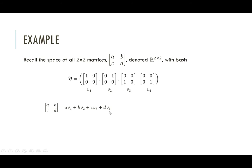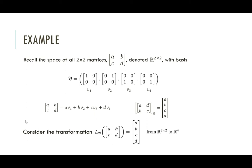Since we can write this matrix as a linear combination of these basis vectors, we can write what's called the coordinate vector of this matrix in this basis. We take the coefficients of the basis vectors — the coordinates — and write the coordinate vector. Now let's consider this process as a transformation itself: a transformation that takes as input a matrix in R2x2 and gives as output its coordinate vector in this basis. This is a transformation from R2x2 to R4.